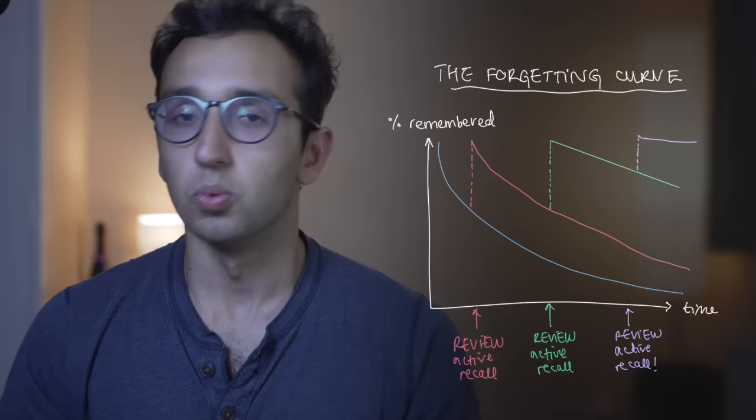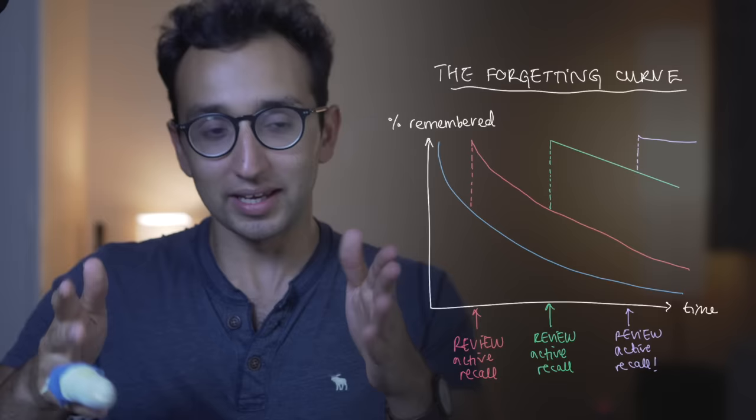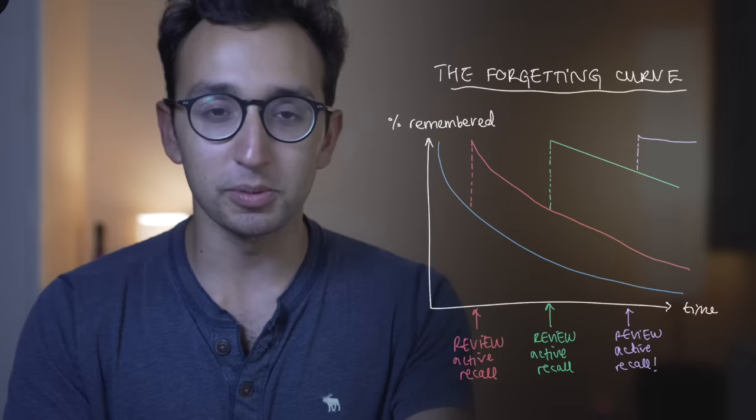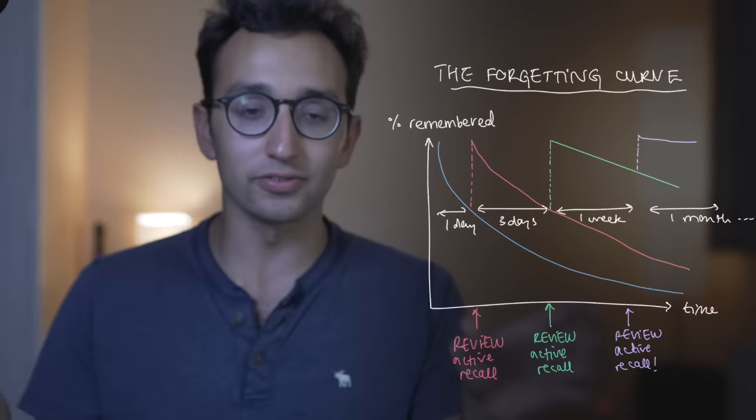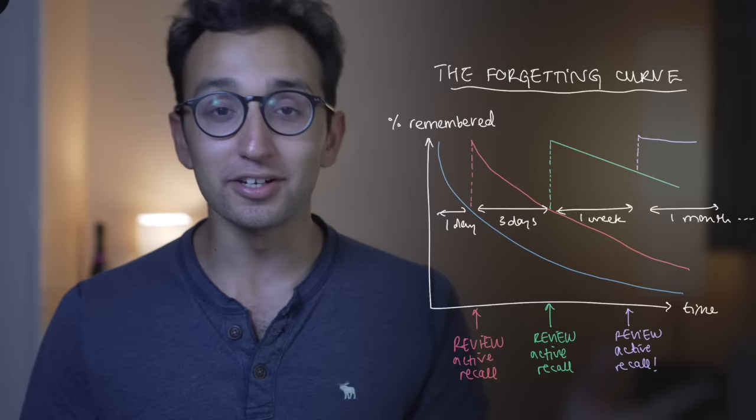The idea behind spaced repetition is that you allow your brain to forget some of the information, such that when you revise it again it's not mindless repetition — it's actually taking brain power. And the more brain power it takes, the more you've forgotten, and therefore the more strongly that information gets encoded. So the example is: anatomy of the upper limb — do it today, tomorrow, three days later, a week later, and then a month later. We've repeated it five times over a spaced interval, retaining so much more than if we'd crammed it all on the first day.